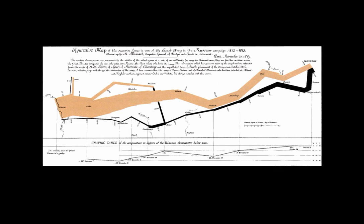Meaning comes from the way information is presented. This data of Napoleon's march to Moscow is really captured in spreadsheets of dates, the number of soldiers, and the temperature on every day of the campaign. But when you put it together graphically, the meaning becomes clear much more quickly. The content of information is not necessarily enough — to get meaning from data, the way it's presented matters as much or more than the data itself.